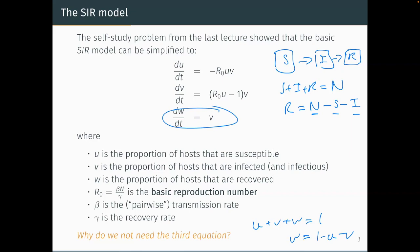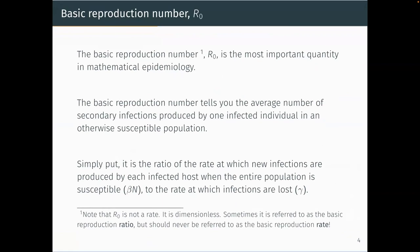R₀ is the most important quantity in mathematical epidemiology — you may have seen it discussed during the pandemic. It helps define not only when an epidemic occurs but also the final size of that epidemic. You can work out the initial growth rate from R₀, calculate approximate vaccination thresholds, and understand why childhood diseases like measles require a very high vaccination rate to achieve herd immunity.